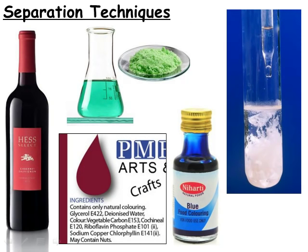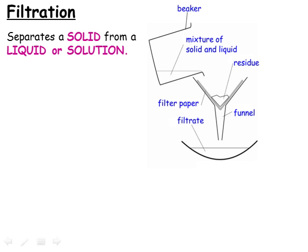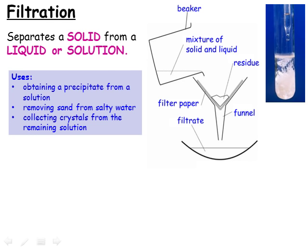Now that we understand the states of matter and how these are changed, we can apply this understanding to separating a variety of mixtures. We might, for example, want to get the precipitate out of a solution where it was formed, or make crystals of a solid from a solution, or separate the different colouring additives used in a food, or extract the alcohol from a sample of wine. The technique of filtering is used to separate a solid from a mixture containing a solid in a liquid or solution — for example, separating a precipitate from the solution in which it was formed.